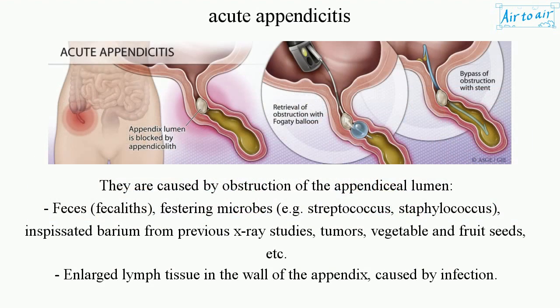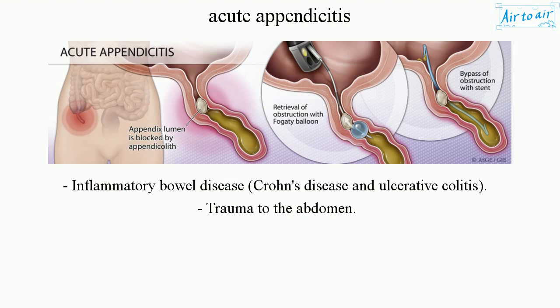Causes include obstruction of the appendiceal lumen by feces, fecaliths, festering microbes such as streptococcus and staphylococcus, inspissated barium from previous x-ray studies, tumors, vegetable and fruit seeds, etc. Also, enlarged lymph tissue in the wall of the appendix caused by infection, inflammatory bowel disease such as Crohn's disease and ulcerative colitis, and trauma to the abdomen.